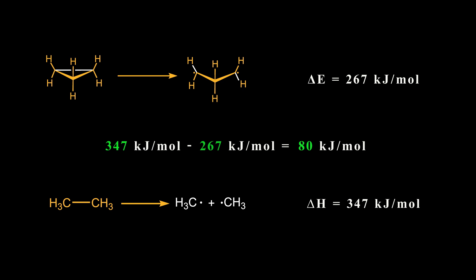This value is 80 kJ per mole lower than the bond dissociation energy of the carbon-carbon bond in ethane. The reason is the ring strain energy of the cyclopropene ring, which makes breaking the carbon-carbon bond easier than in ethane. Cyclopropene is a unique ring in chemistry. If you want to know more about this amazing molecule, check out this video.